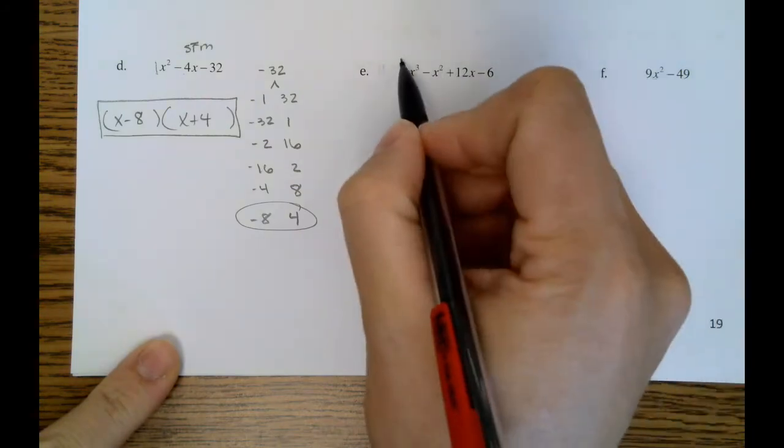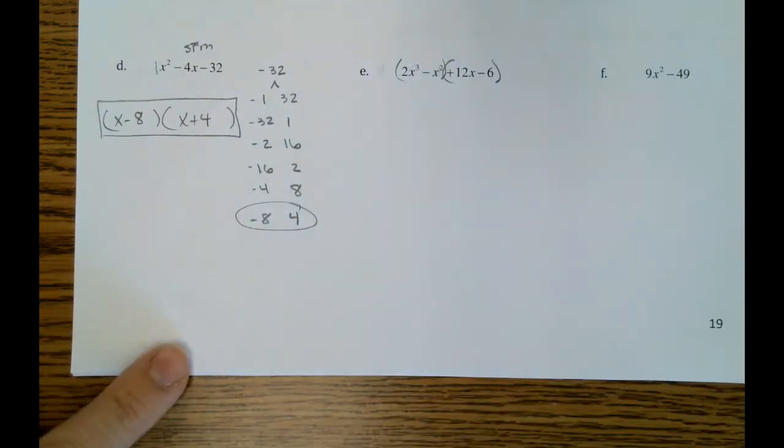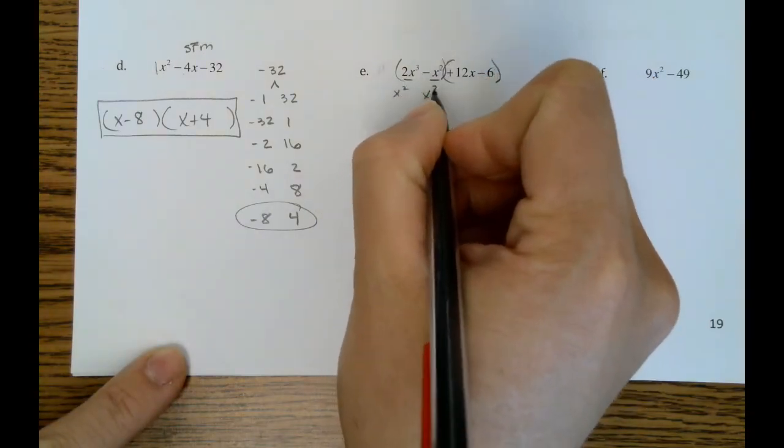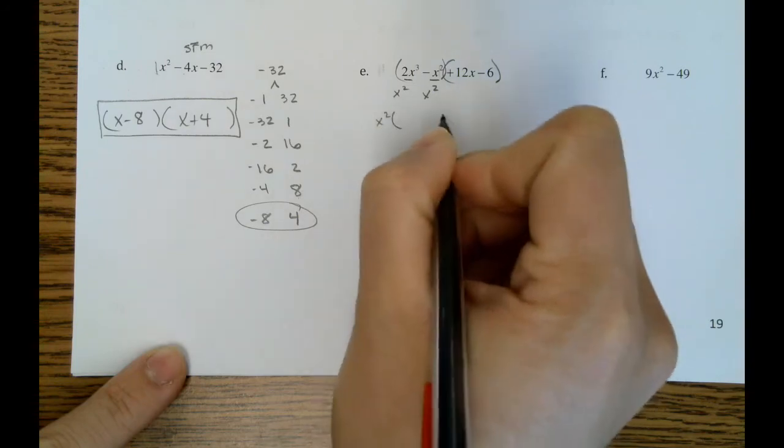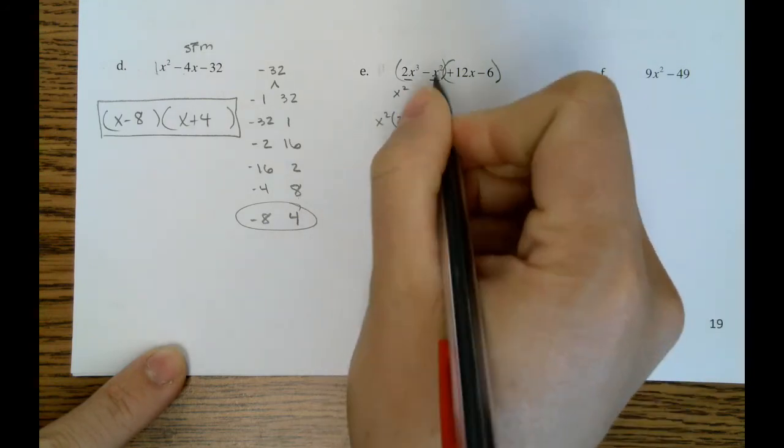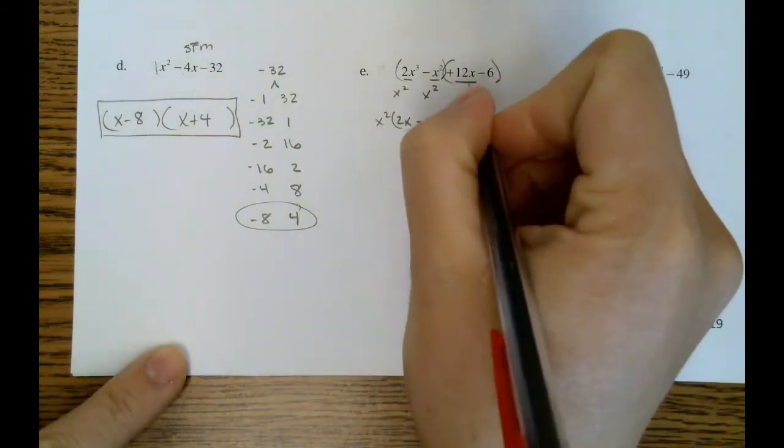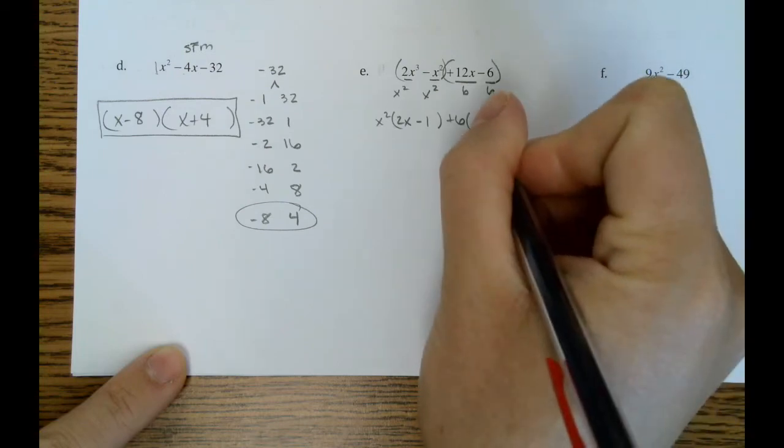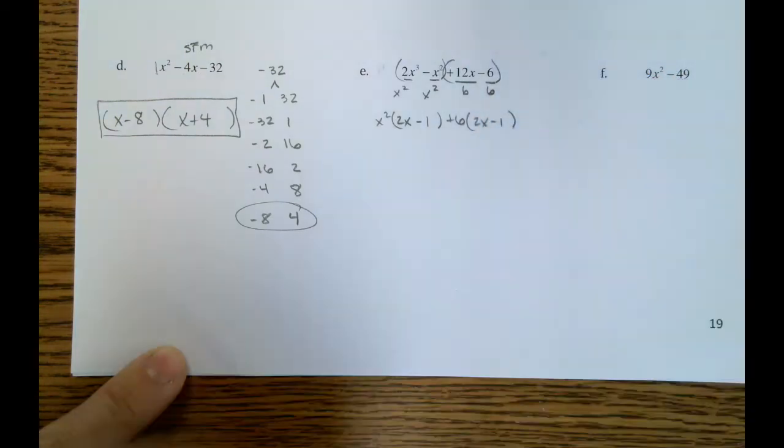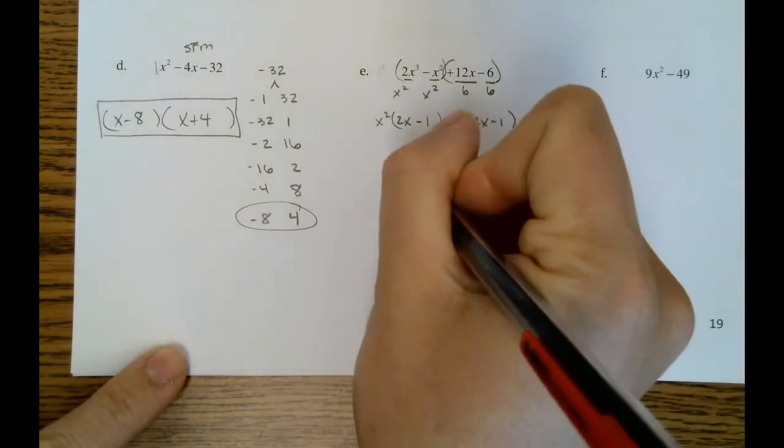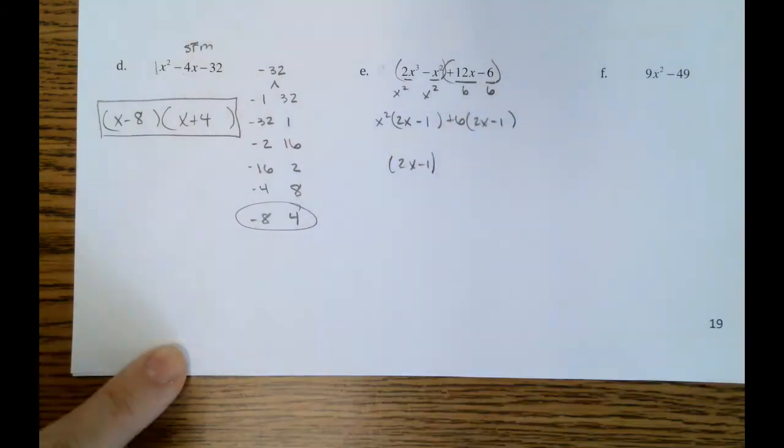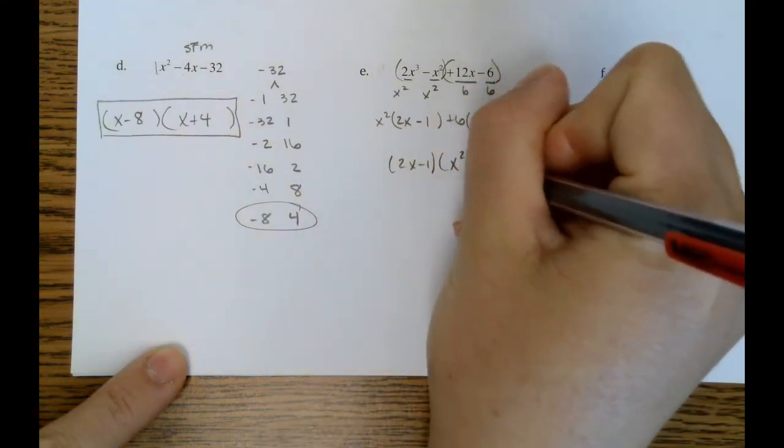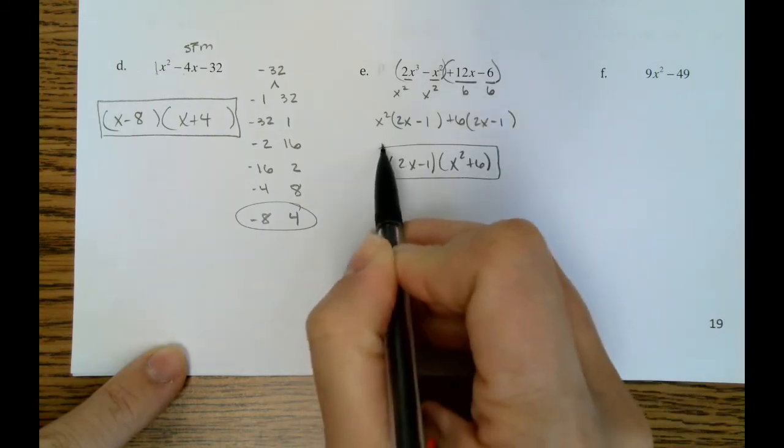Okay. Letter E is four terms. So, this is grouping. We'll go straight into grouping here. We can divide out an x squared from both terms. So, we're left with 2x minus 1. Here, we can divide out a positive 6. So, we're left with 2x minus 1 there. So, 2x minus 1 is a factor. x squared plus 6 makes our final factor.